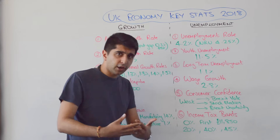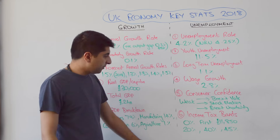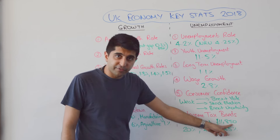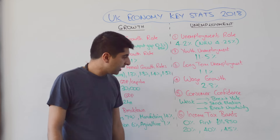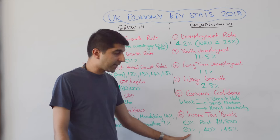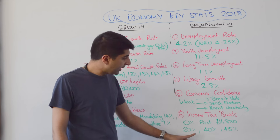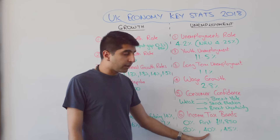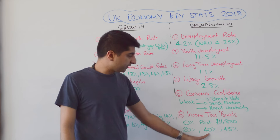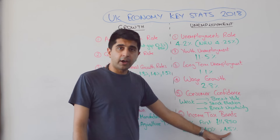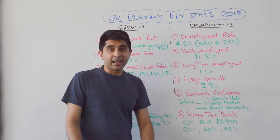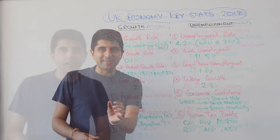On income tax bands: the tax-free allowance has been raised to £11,850. Thereafter, income up to £46,300 is taxed at 20%. Any income above £46,300 up to £150,000 is taxed at 40%. Any income above £150,000 is taxed at 45%.